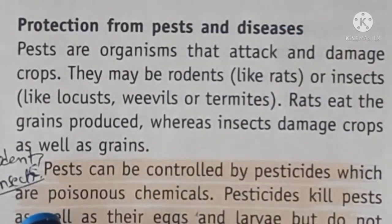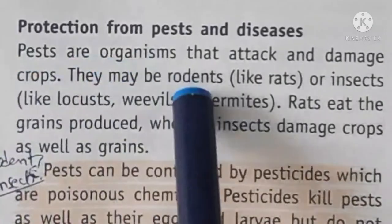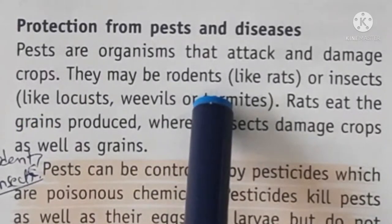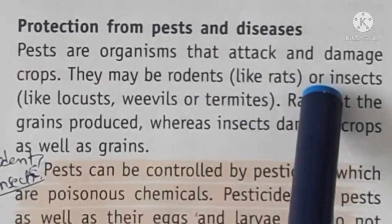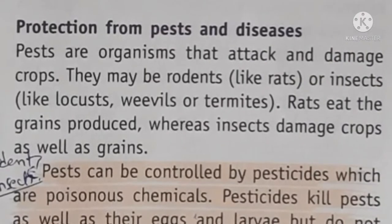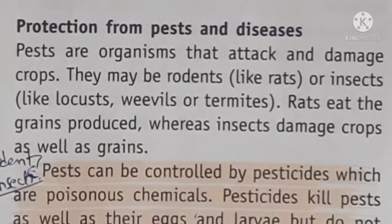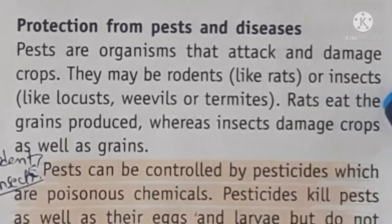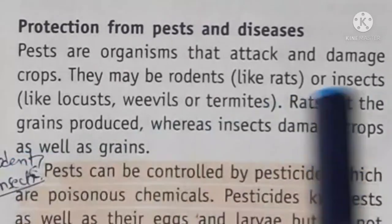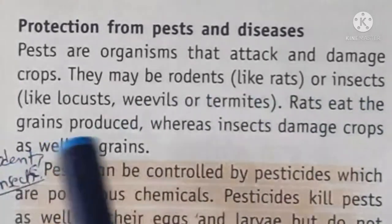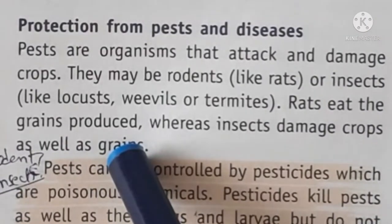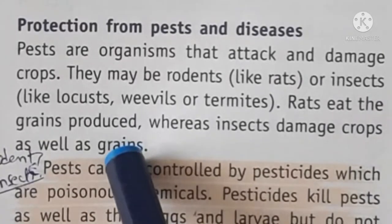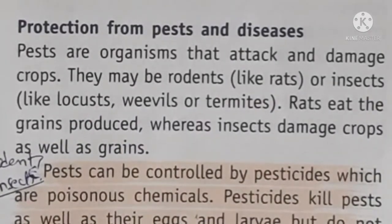Now, if we are talking about protection from pests and diseases — pests are organisms that attack and damage crops. They can be rodents like rats, or insects which can damage crops. Rats chew and cut crops and eat grains. When you harvest your crops and store them, rats can damage your stored grains.